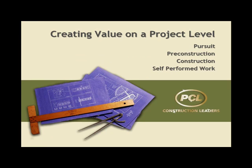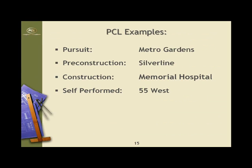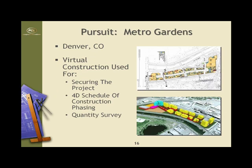Here are some examples from different phases of projects: pursuit, pre-construction, construction, and self-performed work. Metro Gardens is the first example. We used it during the presentation to the owner to try and win the project. The biggest thing we used it for was a 4D schedule, and actually extrapolating a 5D — which is the 3D model combined with the cost of the project every month and then the manpower loading as well.